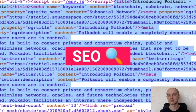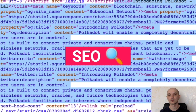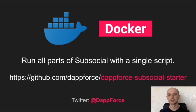Your posts and blogs will be embedded with a beautiful preview on Twitter, Facebook, Telegram, Riot, and other platforms. SubSocial is also a mobile-friendly web application. While we don't yet have separate mobile apps for Android and iOS, you can easily read blogs and posts on your mobile phone. You can try SubSocial locally by running it in a Docker container. We have a repository called SubSocial Starter where you can run every part of SubSocial with just one shell script command.